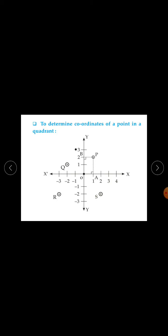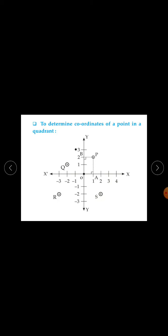To summarize: if a point is in the first quadrant, both coordinates are positive. If a point is in the second quadrant, x-coordinate is negative and y-coordinate is positive. If a point is in the third quadrant, both coordinates are negative. And if a point is in the fourth quadrant, x-coordinate is positive and y-coordinate is negative.